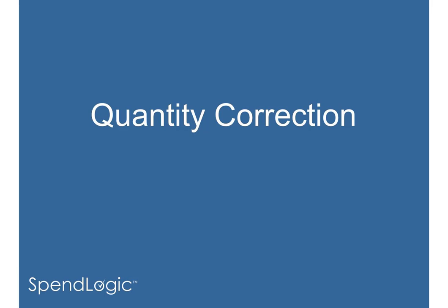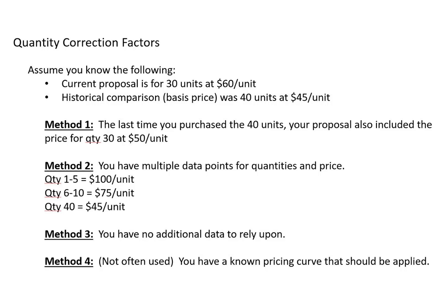The creation of a quantity correction factor tool is the single biggest change to SpendLogic in this round of development. We're going to run through four different examples and show you what each of the options on the quantity correction page do. Throughout these, assume that the current proposal is for 30 units at $60 per unit, and historically the basis price you're using was a PO for 40 units at $45 a unit.